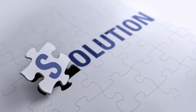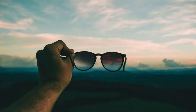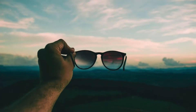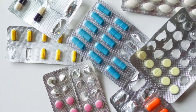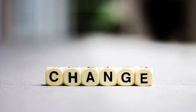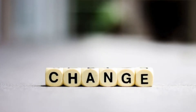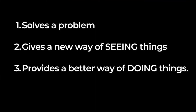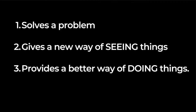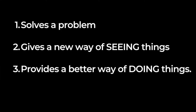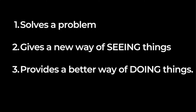When academics read research papers, they're really hoping to see if your work solves a problem, gives a new way of looking at things, or provides a better way of doing things. So the goal of your research paper is to change the ideas or the behaviors of the readers. If your paper does not have any of these three elements, it is very difficult to convince your reviewers or editors to accept your paper.